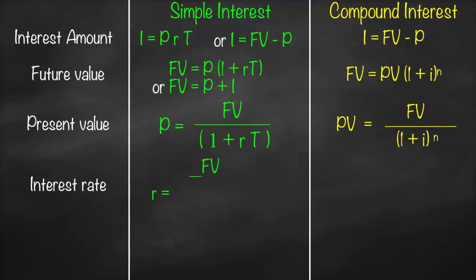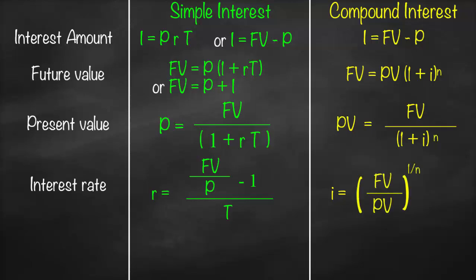For interest rate, the simple interest rate is equal to (future value divided by P, minus one), all divided by time. While for compound interest, the effective interest rate is equal to (future value divided by present value) to the power (1 over n), minus 1.